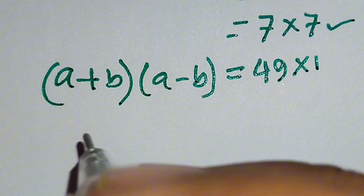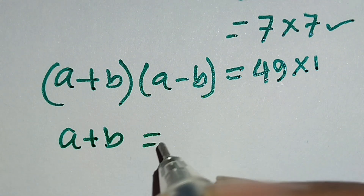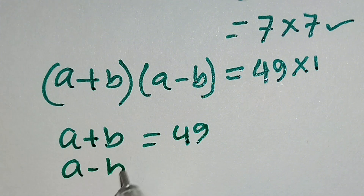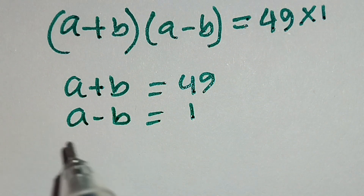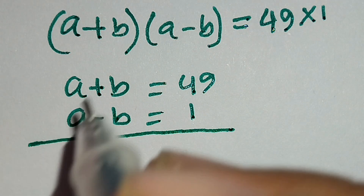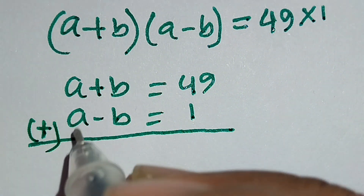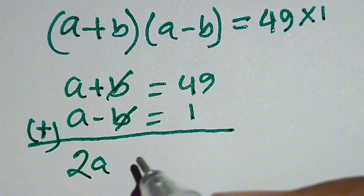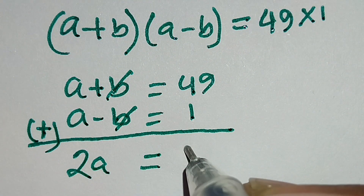From here, a plus b equals 49 and a minus b equals 1. Adding these two equations: a plus a equals 2a, and b minus b equals 0, giving 49 plus 1 equals 50.